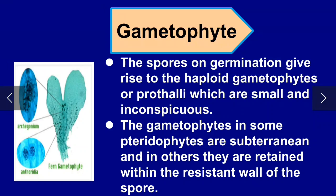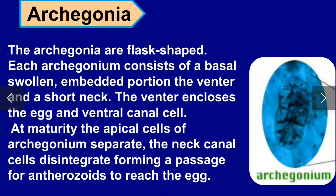The gametophyte of Pteropsida is haploid in structure and subterranean, meaning underground. Archegonia are the female reproductive organ of Tracheophyta. Archegonia are flask-shaped; each archegonium consists of a basal swollen portion and a short neck. The basal portion contains the egg.